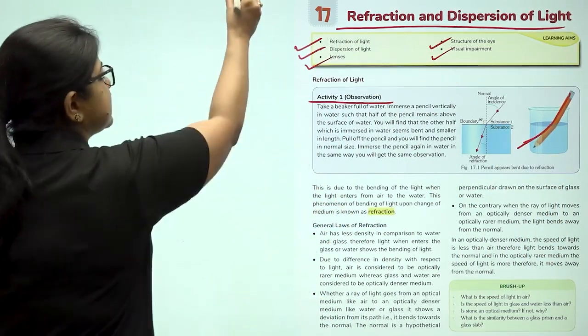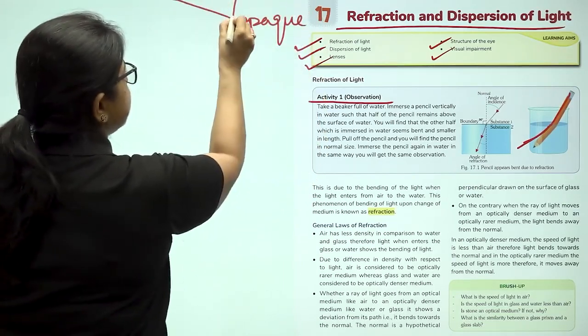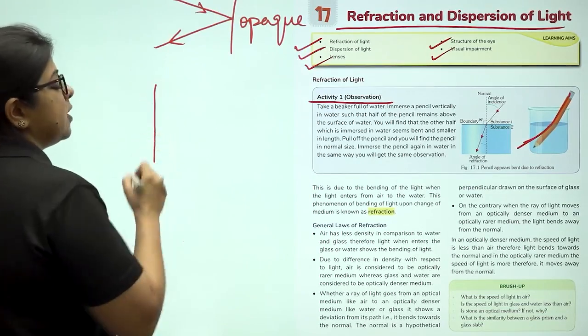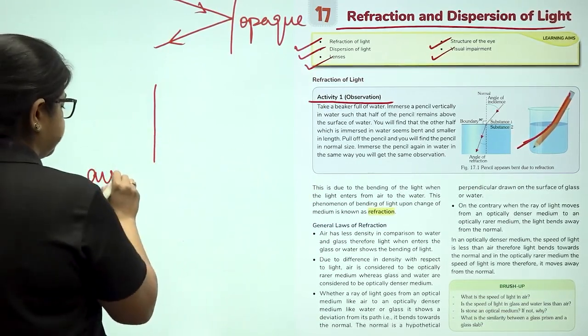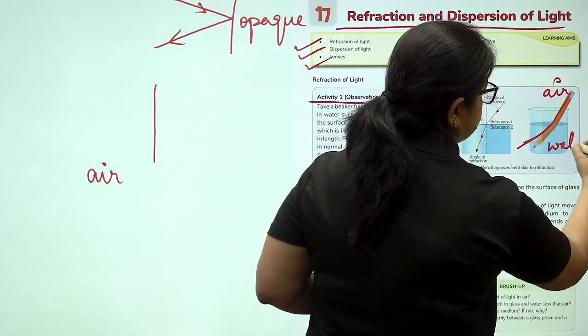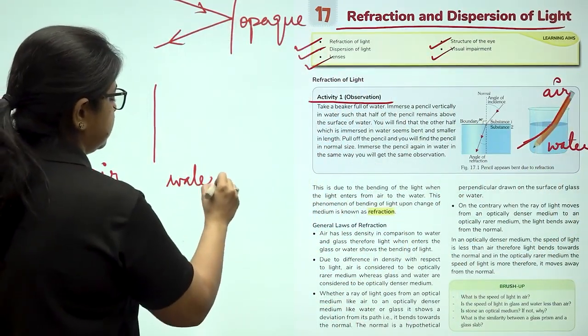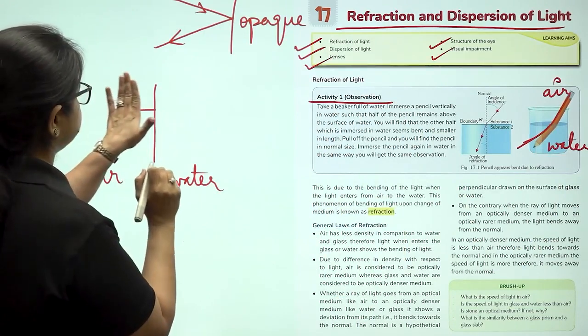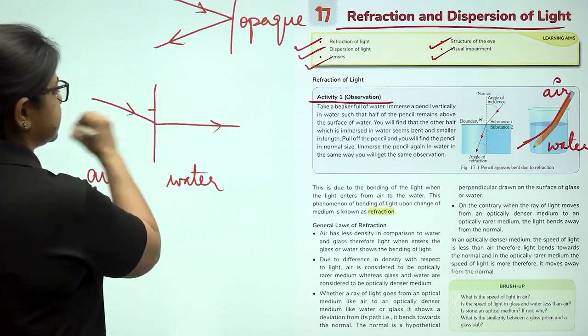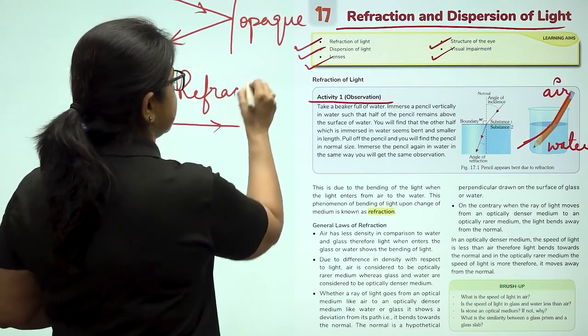When light strikes an opaque object, what happens? It is reflected back. When light enters from one medium, in this case it is entering from air to water. When it enters from air to water, what is happening? The light is bending. This bending of light is what is known as refraction.